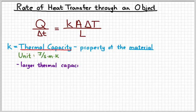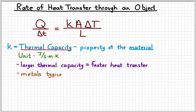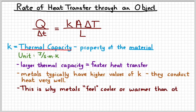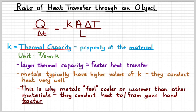The larger the value of the thermal capacity is, the faster heat is going to be transferred through that particular material. Typically metals have higher thermal capacities than other materials. The reason being is they conduct heat very well. Those free electrons in a metallic substance are what allows that heat energy to be transferred very well. Because they can collide, move around a lot. So because metals typically have a higher value of K, that's why they typically feel cooler or warmer than other materials that are around them. They conduct heat to and from your hand faster than other materials.